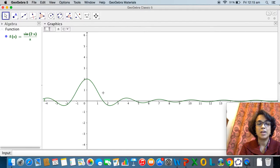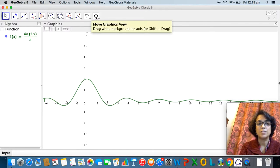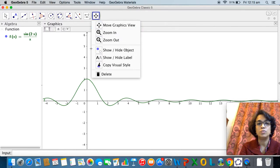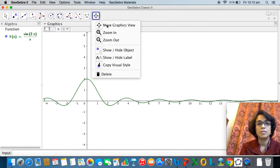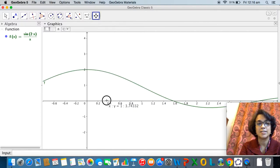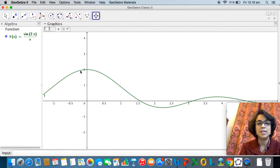As you can see on the graphics view the graph has been plotted. Now I can use the move graphics view, that is the last icon on the toolbar, and expand the y-axis and the x-axis so that I can see the graph of the function in a small interval around zero.